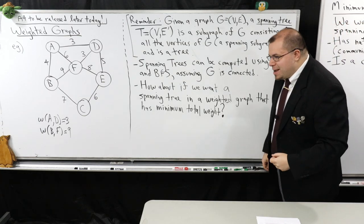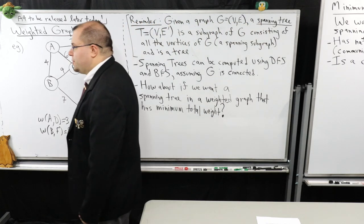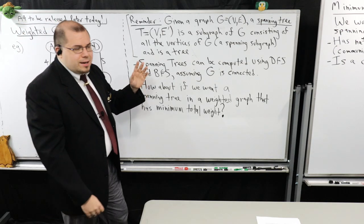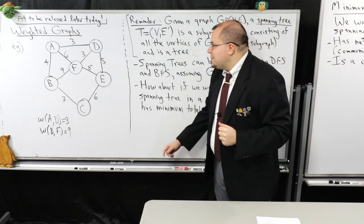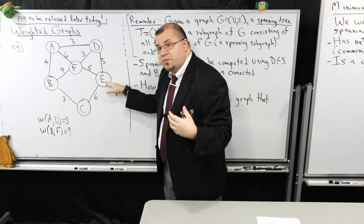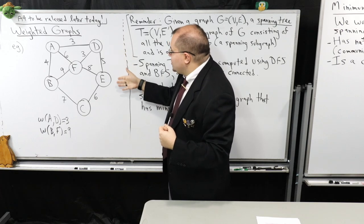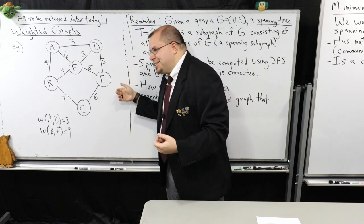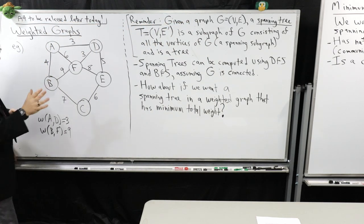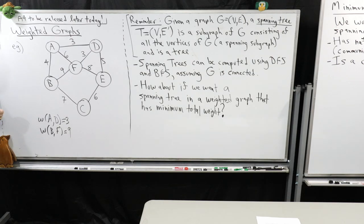I want to get back to where I was last day. I was talking about weighted graphs. At the end of lecture, I was describing what a weighted graph is. The idea is quite natural: we assign numbers to the edges. There are also weighted graphs where you assign weights to the nodes or vertices, but the most common one you'll run into is where the edges have a weight or cost on them. We usually call these weights or costs, depending on the context.